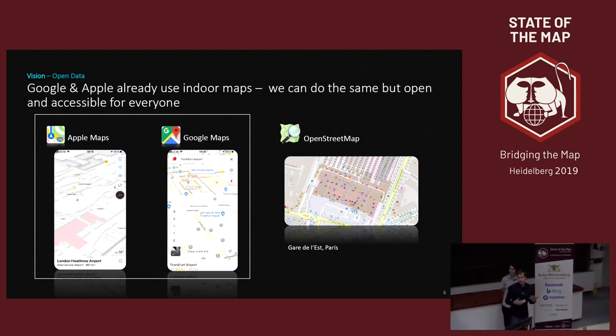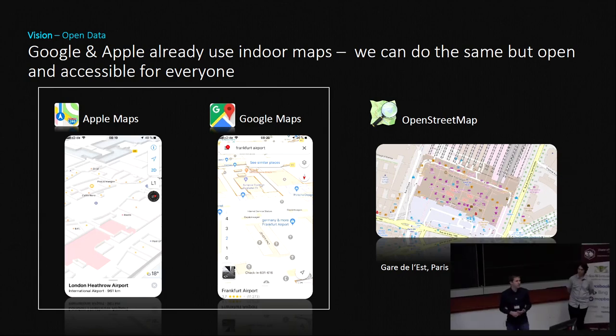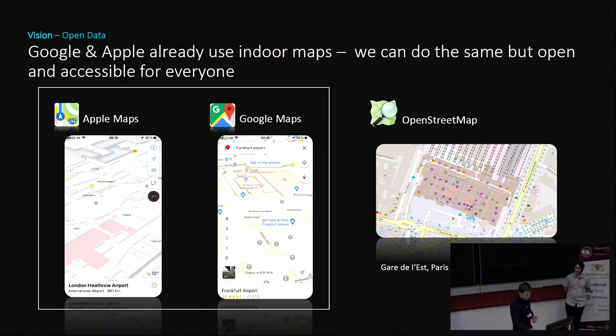Apple Maps and Google Maps have already entered the indoor space, but they're not open — they don't provide you the data, they just give you services. They are proprietary and commercial. We want to have it open and accessible for everyone. That's our vision.